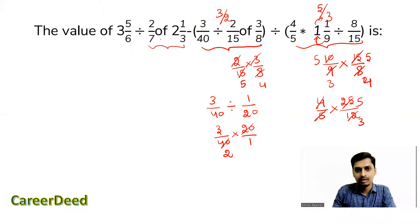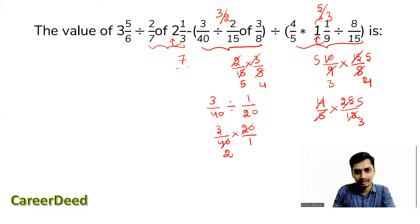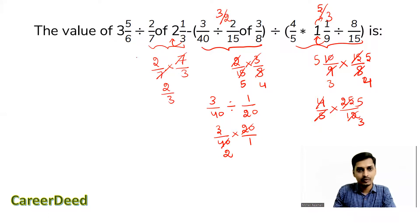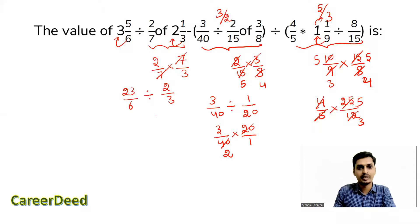Next we solve: 2/7 of 2 and 1/3. Converting 2 and 1/3 = 7/3. So 2/7 × 7/3 — the 7s cancel, giving 2/3. And we have 3 and 5/6 = 23/6. So 23/6 ÷ 2/3, which is 23/6 × 3/2 = 23/4.